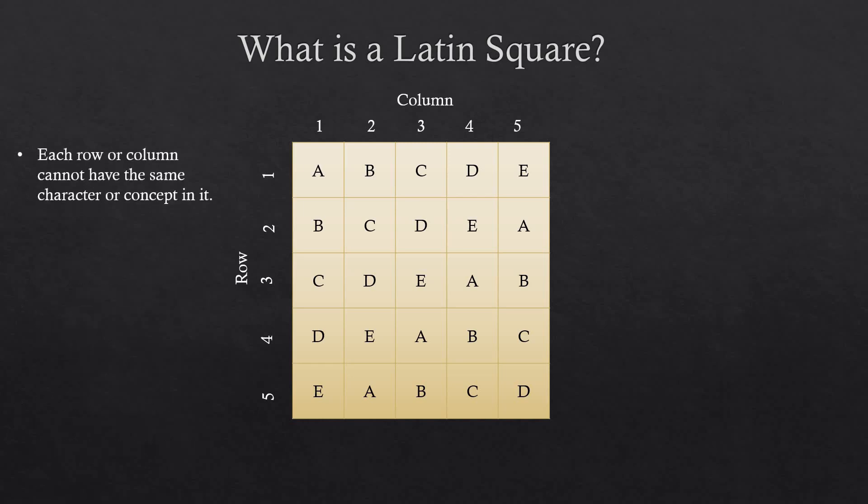The main rule for Latin squares is that each row or column cannot have the same character or concept in it. In this example, you can see that all the letters are arranged in this fashion. In Latin squares, there are two fundamental concepts: blocking and treatment factors.